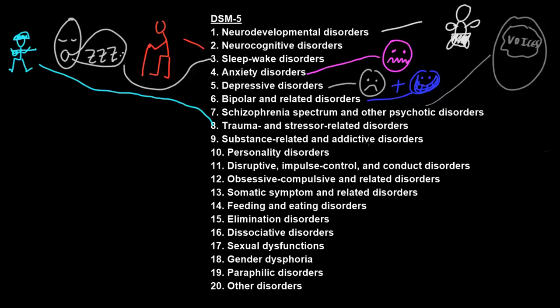Substance-related and addictive disorders involve distress or disability from the abnormal use of substances that affect mental functions. There are a lot of substances that can affect mental functions and cause a substance-related disorder. These include alcohol, caffeine, cannabis, hallucinogens, inhalants, opioids, sedatives, hypnotics, anxiolytics, stimulants, and tobacco, amongst others. The mental effects of these substances may cause mental abnormalities similar to other types of mental disorders, including mood abnormalities, anxiety symptoms, or psychosis. Other addictions, like gambling, are also included in this category because they share many aspects of addiction to substances.